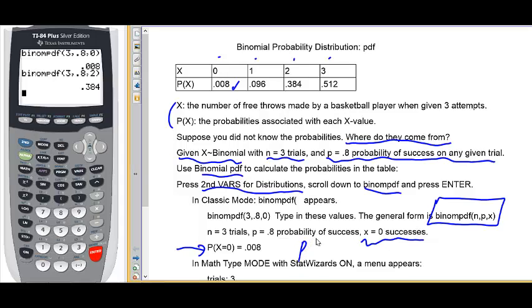The probability that x equals two is .384 as seen in the table. So, you can find any individual x values probability. One more trick.